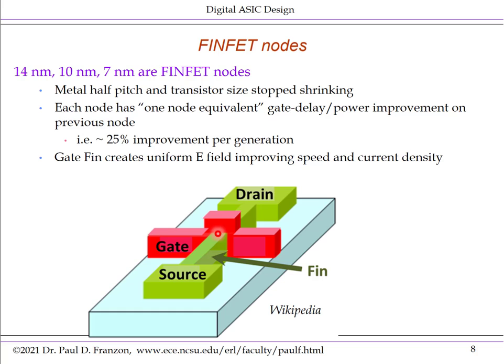Because the gate surrounds the channel on three sides rather than lying above it, you get a more uniform electric field, which improves the speed and current density over that of a bulk or traditional SOI transistor. But in these nodes, the metal half-pitch and transistor size stops shrinking, due to the limits of lithography, which we'll get to later in another video.